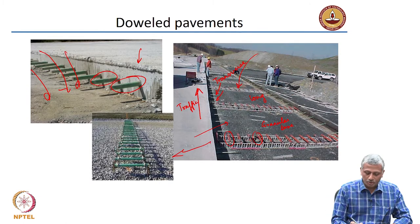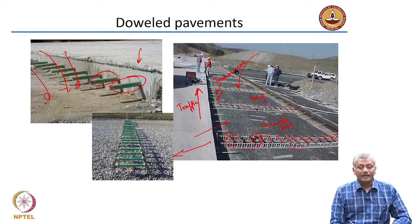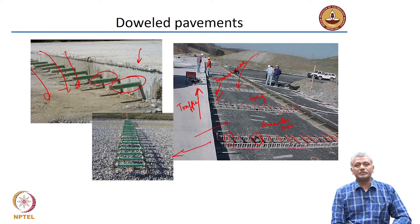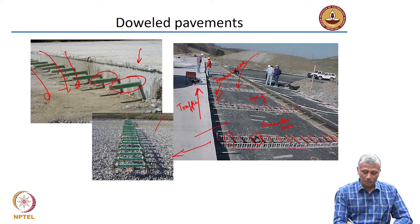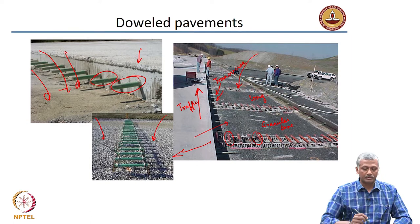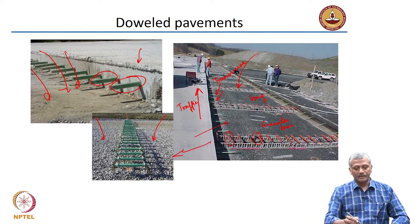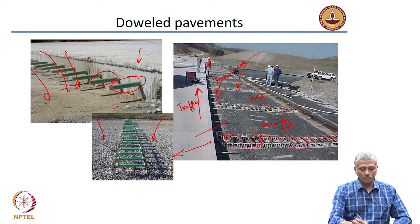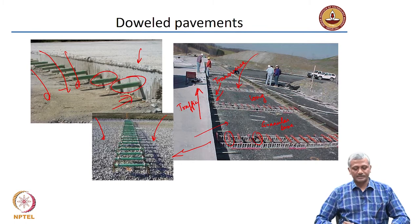A close-up view is shown here. These dowels are placed exactly where the joint is supposed to come between adjacent slabs. Then you will be pouring the concrete on one side and then pouring the concrete on the other side, just like what is shown in this case.